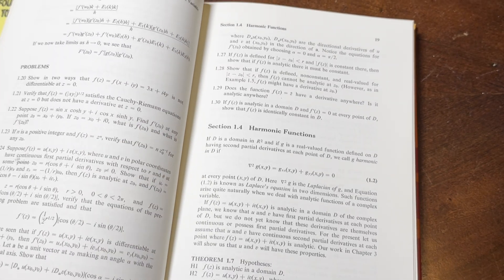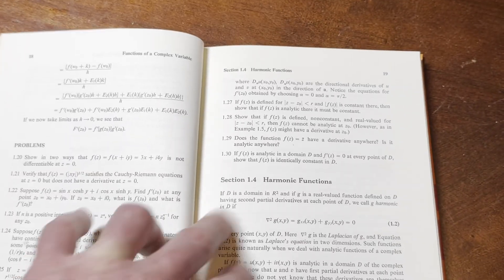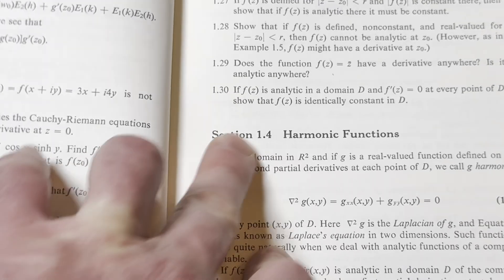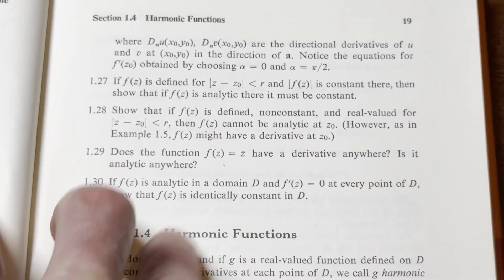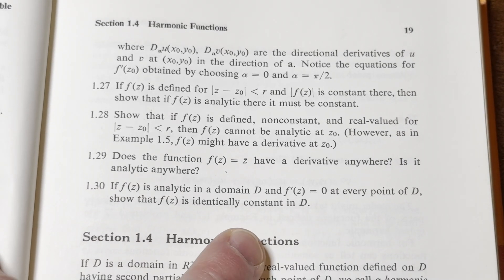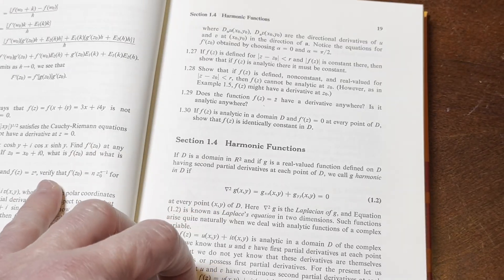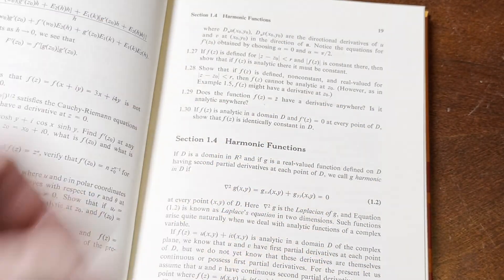A lot of the exercises that you see in these books are very common. For example, this one here. It says, if f of z is analytic in a domain d, and f prime of z is equal to 0 at every point of d, show that f of z is identically constant in d. So, I think I even have a video for that. So, I mean, you see these in a lot of books.